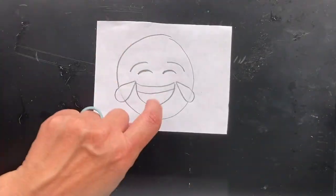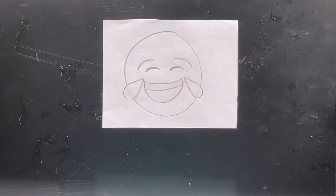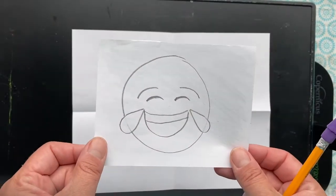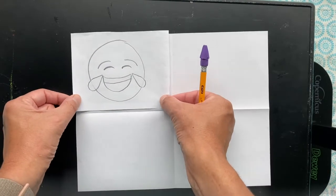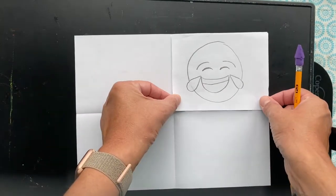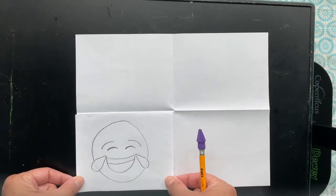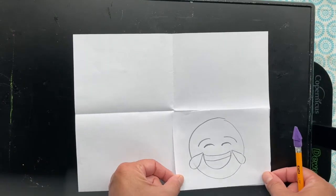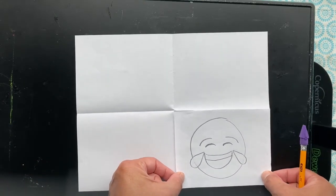Your next step is you're going to trace this guy, or whatever you drew, onto your paper. Now he should be the same size as the squares on your good paper, so that will make it easy for you to get him in the right position on your paper.